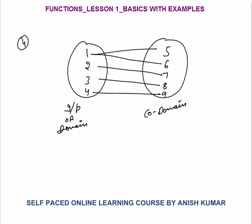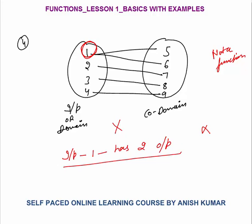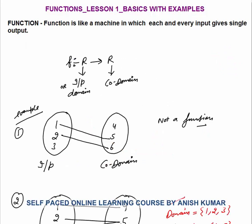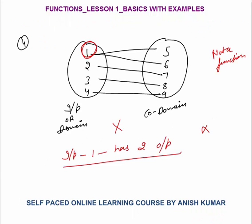Fourth example: input or domain set is 1, 2, 3, 4. Co-domain is 5, 6, 7, 8, 9. Is this a function? This is not a function. Why? Because input 1 has two outputs. So, this is not a function. The basic definition of function says that each and every input gives a single output. Whereas in this case, input 1 gives two outputs, 5 and 6, which is not valid as per the definition of function. So, this graph does not represent a function.